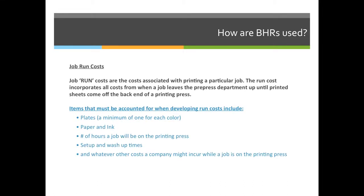Combining these two things, we can call it the job run cost — the costs associated with printing a particular job. The run cost incorporates all costs to run a job from setup through when printed sheets come off the back end of the printing press. Job run costs are only one portion of quoting a job; I would still have to incorporate prepress costs, finishing costs, delivery costs, etc. Job run costs can be divided into variable costs — like a budgeted hourly rate — and fixed costs that are dependent on the customer. For example, if the customer buys a thousand sheets at $1 per sheet, they spend $1,000; if they choose paper at $2 per sheet, I can't incorporate that into my BHR because I don't know what paper they'll choose.